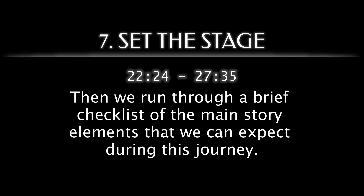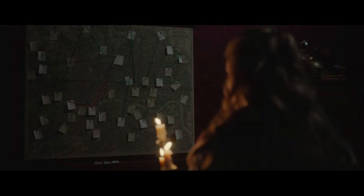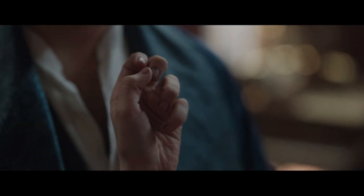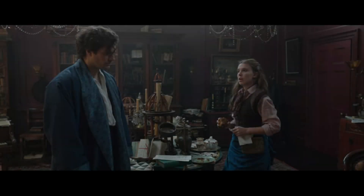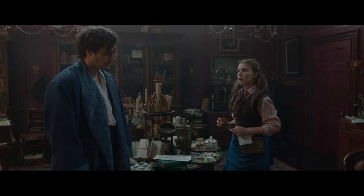Then, we run through a brief checklist of the main story elements we can expect during this journey: the gargoyle presence of Superintendent Grail, silliness — lots and lots of silliness — Sherlock and his own mind-numbing case, the Holmes family dynamic including their game of deductions, and Enola's deepening mystery. Which brings us to the brief event that launches our characters into the wild jungle of the second act — also called the Oh Shit Moment. Sherlock accidentally insults Enola, entwining the acceptance of help with desperation. Ahhhh shit.